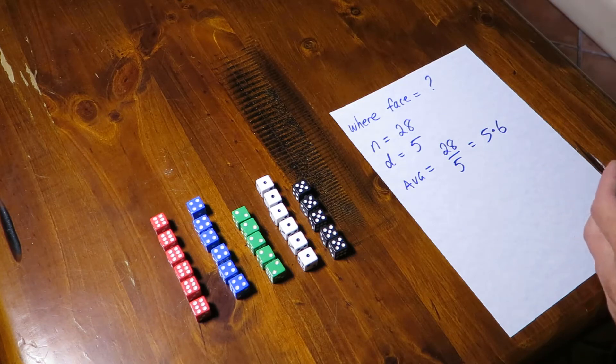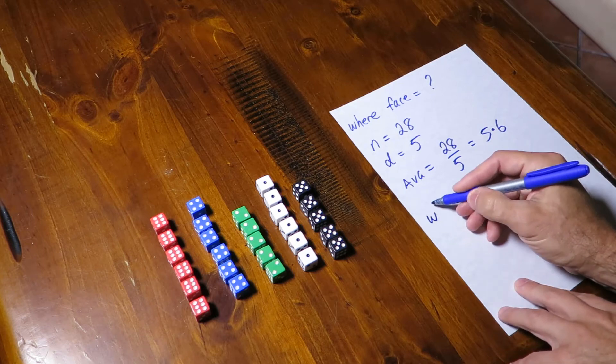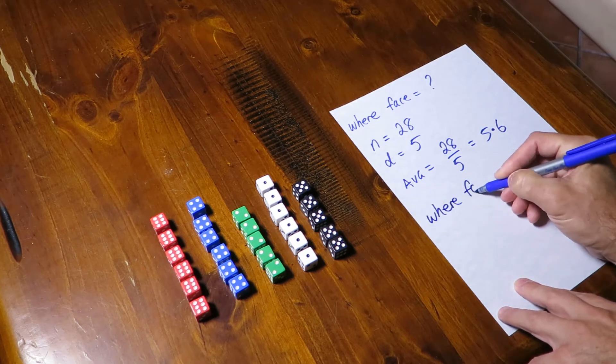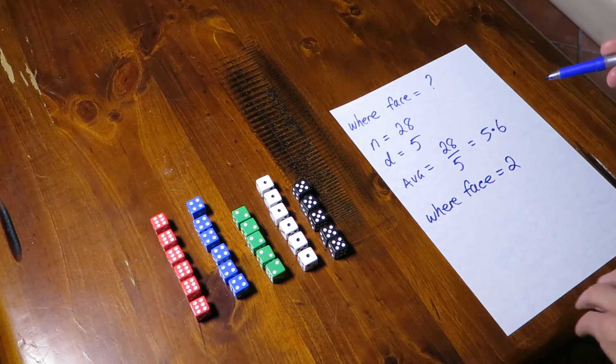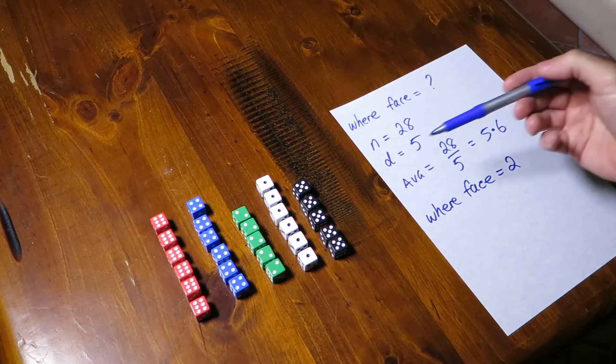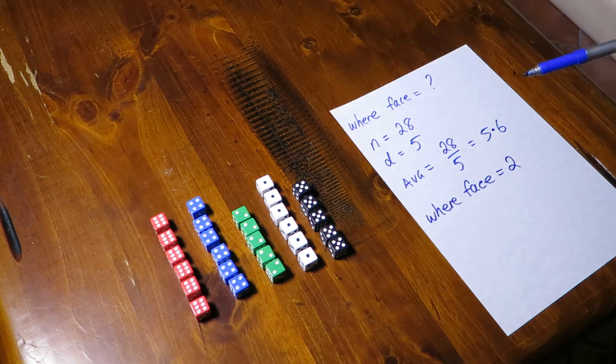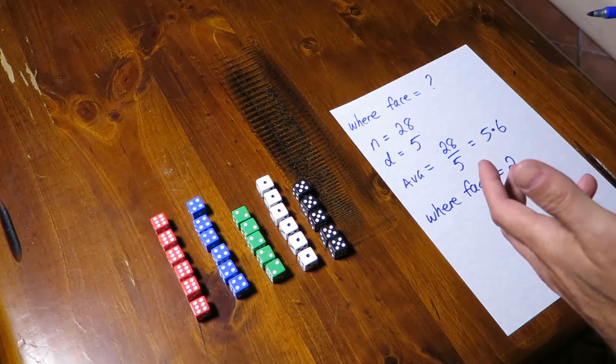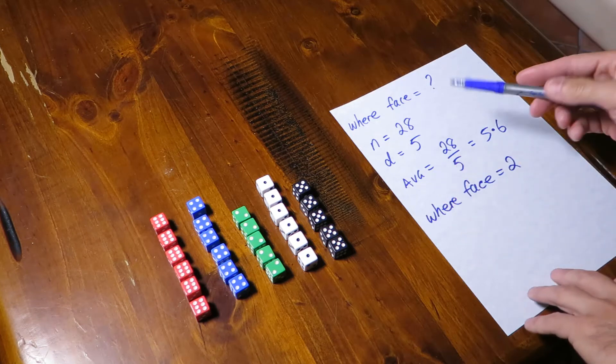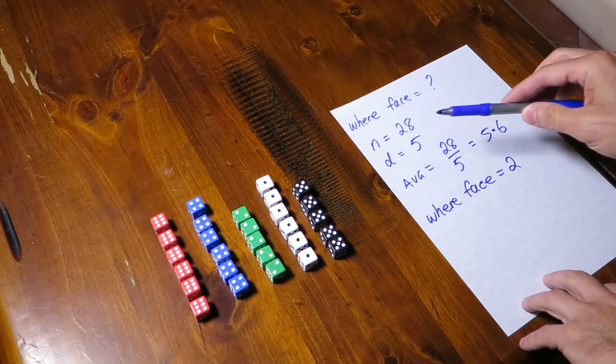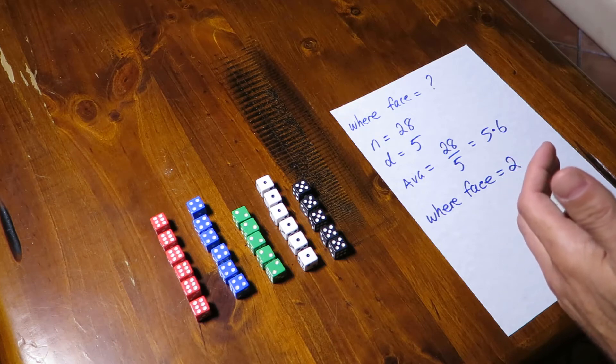And that's actually a pretty good estimate. When I look at if I ask the question where face equals two my estimate will be five point six and you can see there's actually five. And similarly if I ask for when face equals one or face equals four. So even without a histogram just knowing the total number and the number of distinct values is going to be good enough in this particular case.